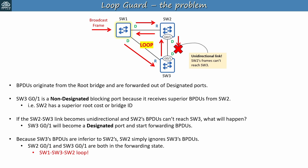It would be better if the hardware issue caused the link to go down entirely. In that case SW2 and SW3 would both disable their G0-1 ports and there would be no loop. But how can we deal with a situation where a hardware issue causes a unidirectional link? The answer is Loop Guard.